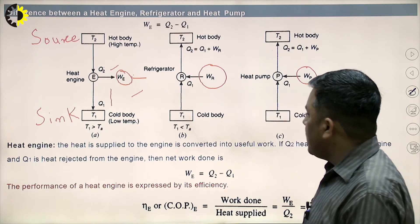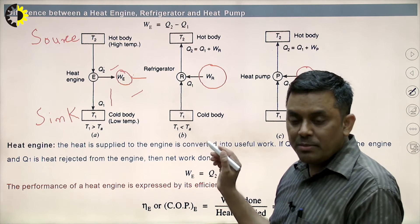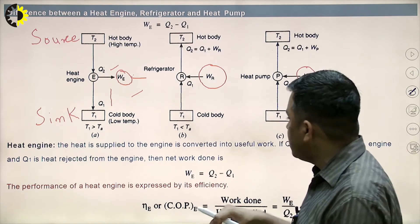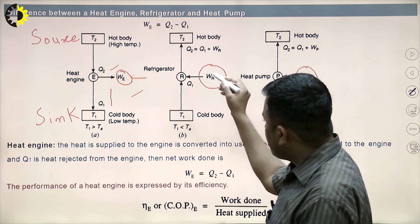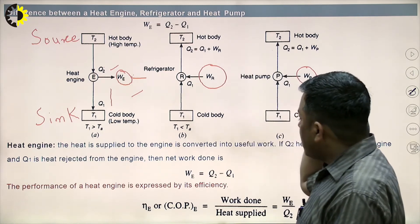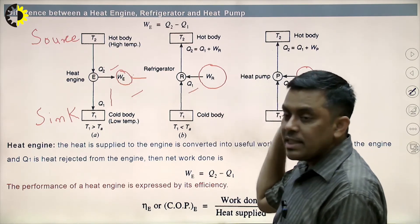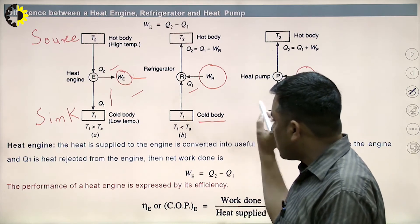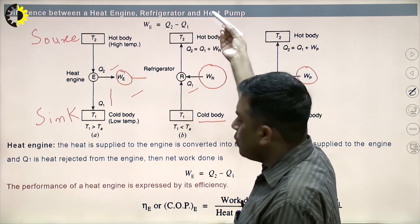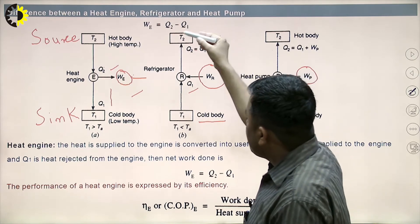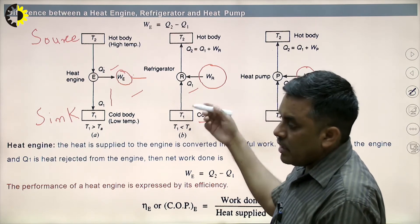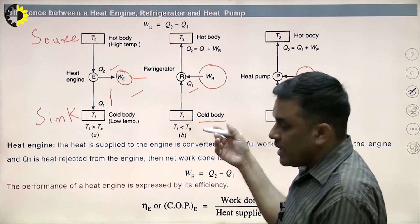Refrigeration means extraction of heat from a low temperature body, but this is not spontaneous — we need some work input. That work is the compressor work W_R. With the help of compressor work W_R, a certain amount of heat Q1 is extracted from the low temperature body, and then this heat is delivered to the high temperature body. The temperature of the high temperature thermal reservoir increases, while the temperature of the low temperature body gets lower and lower as heat is extracted.